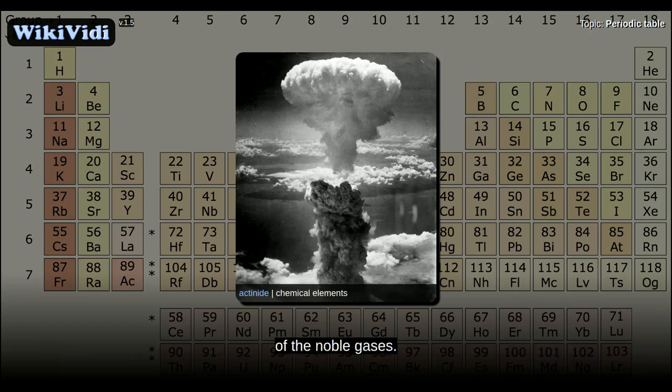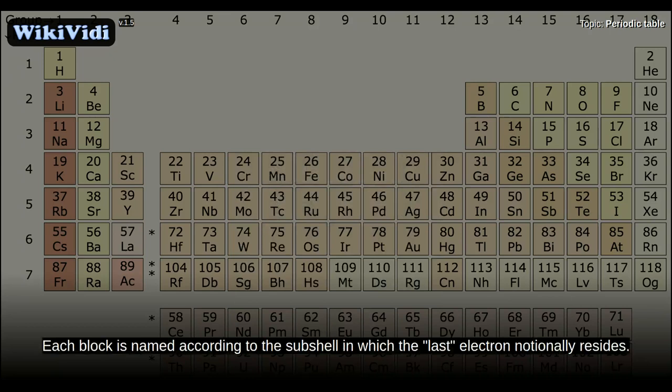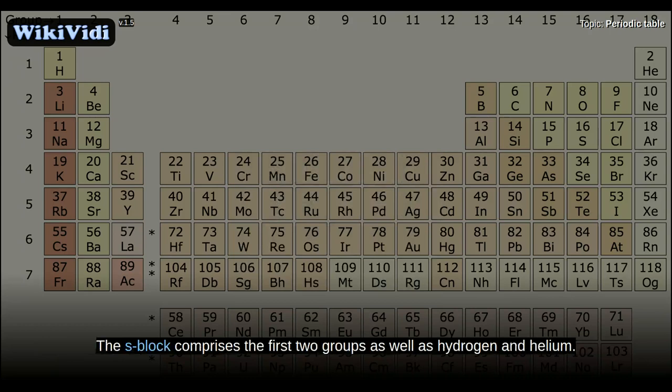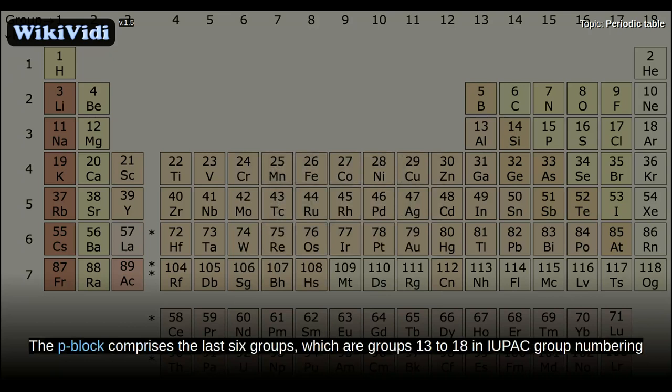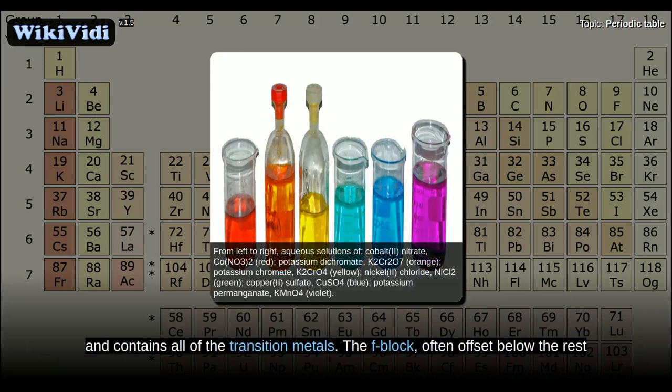Specific regions of the periodic table can be referred to as blocks, in recognition of the sequence in which the electron shells of the elements are filled. Each block is named according to the sub-shell in which the electron notionally resides. The S-block comprises the first two groups as well as hydrogen and helium. The P-block comprises the last six groups (groups 13 to 18 in IUPAC numbering), and contains all of the metalloids. The D-block comprises groups 3 to 12 and contains all of the transition metals. The F-block, often offset below the rest of the table, has no group numbers and comprises the lanthanides and actinides.